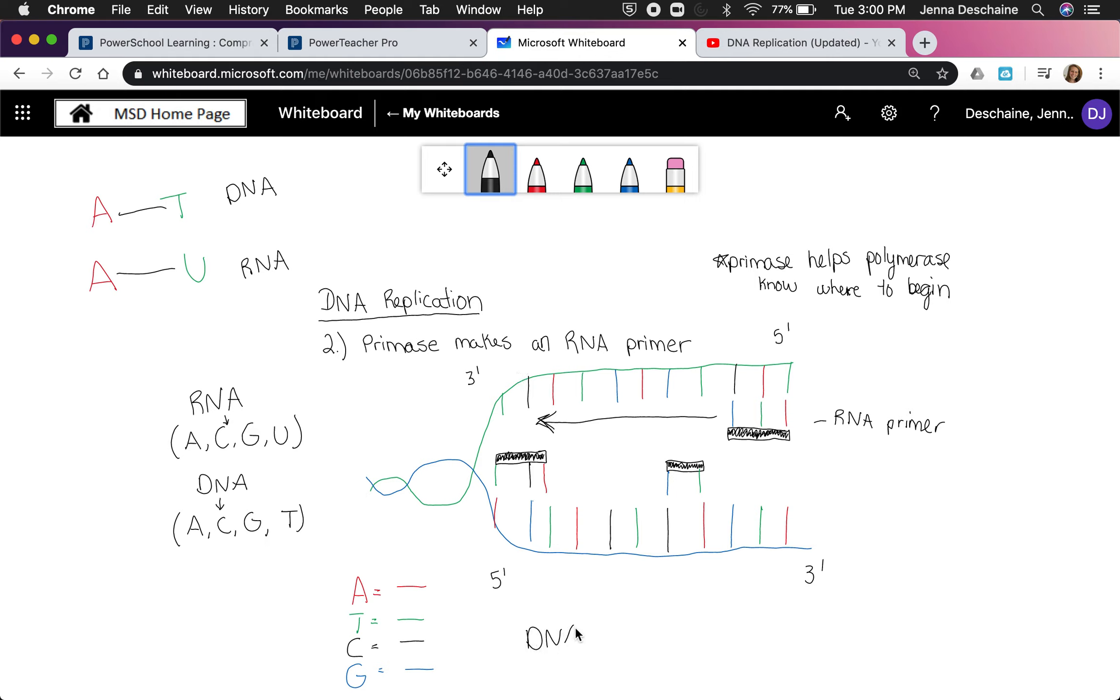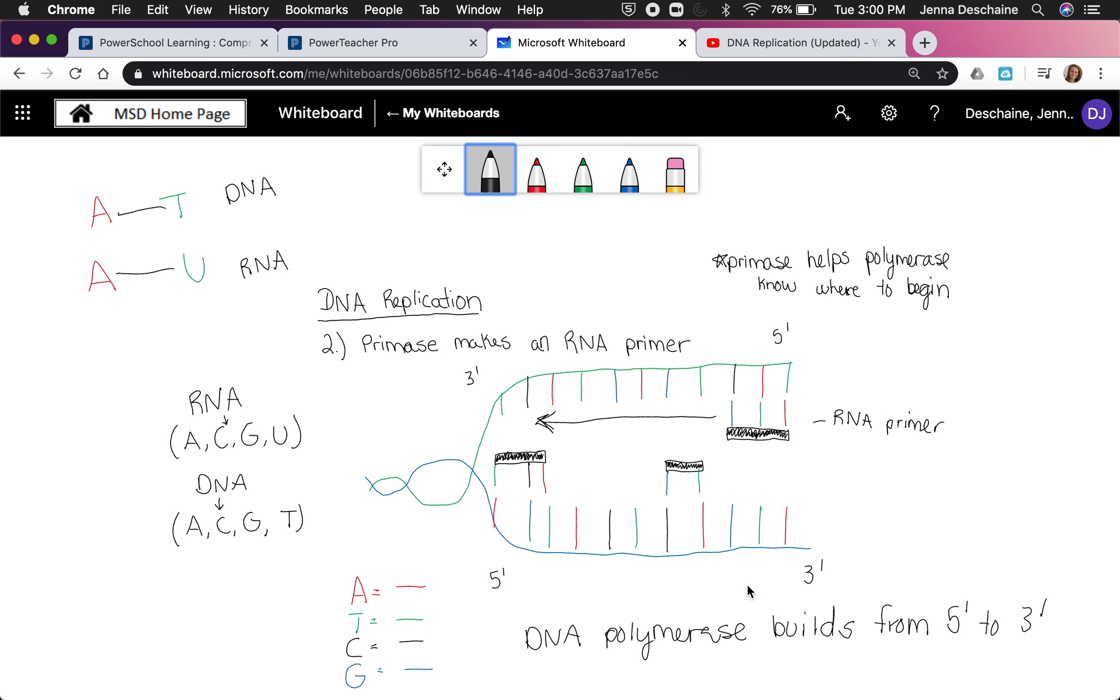DNA polymerase can only build from five prime to three prime. DNA polymerase isn't that special because it only can really build in one direction. I'm not trying to bash DNA polymerase. Obviously, it's very cool, but it can only build and add nitrogen bases in one direction. I'm going to talk a little bit more about that tomorrow and how DNA polymerase works differently on this top strand versus this bottom strand.